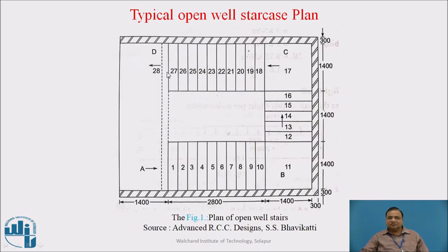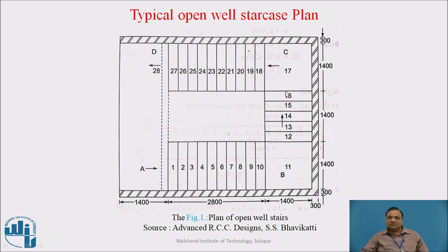This is an open-well staircase. Here we have the first flight from A to B. This first flight is resting on a beam below the first riser. These are the number of treads 1 to 10, and the 11th is the quarter landing. Then again here 12, 13, 14, 15, 16 — these four to five steps are perpendicular to the hall, and here again is the second flight from 18 to 27. These are all the treads, and this is again a quarter landing, with the landing at the top.